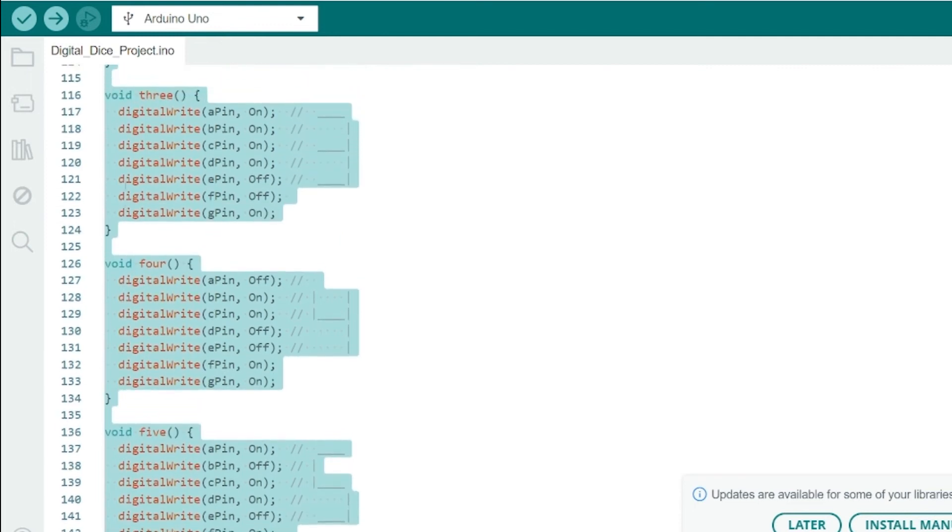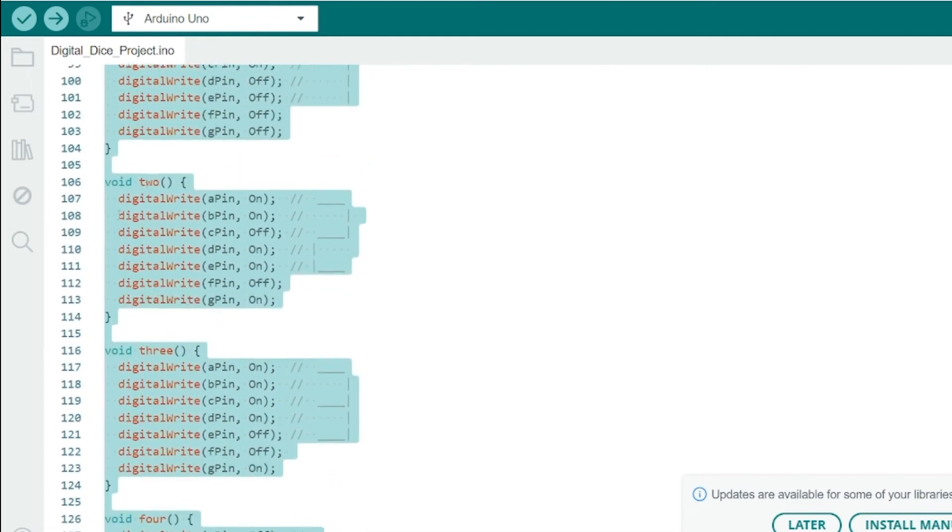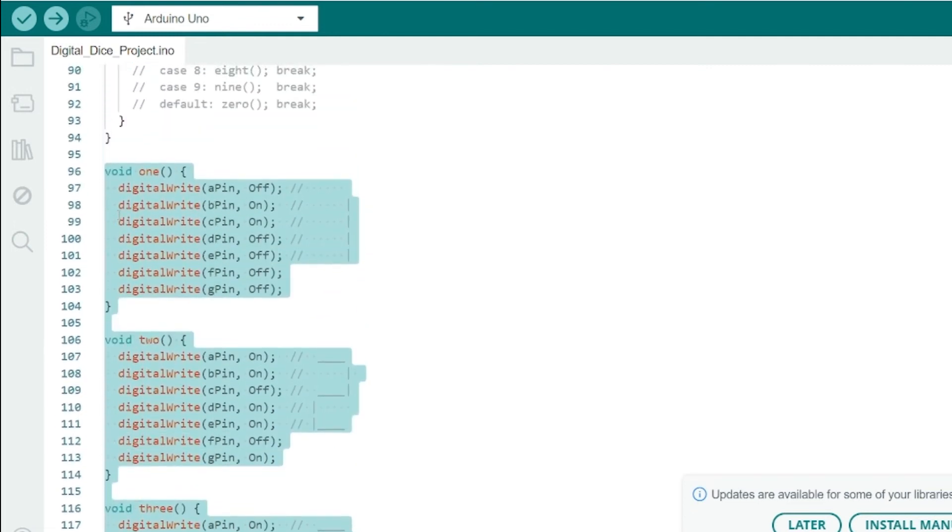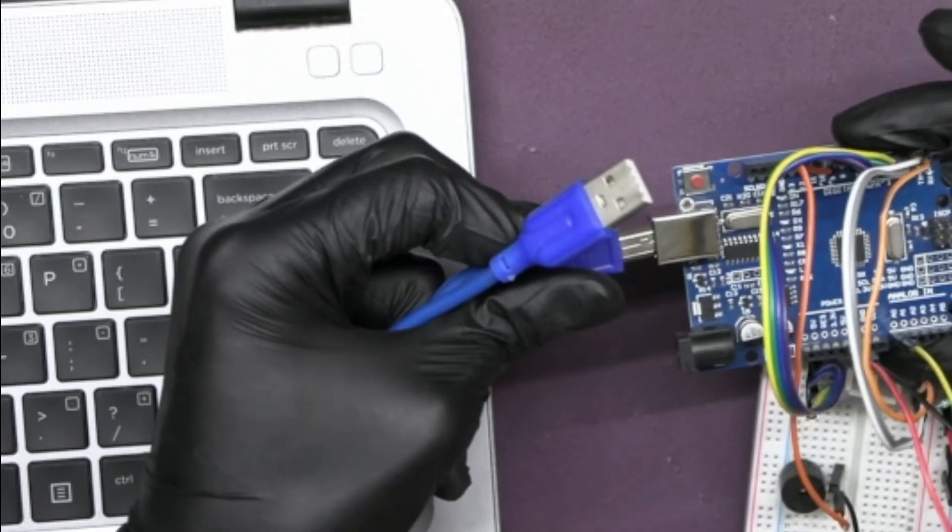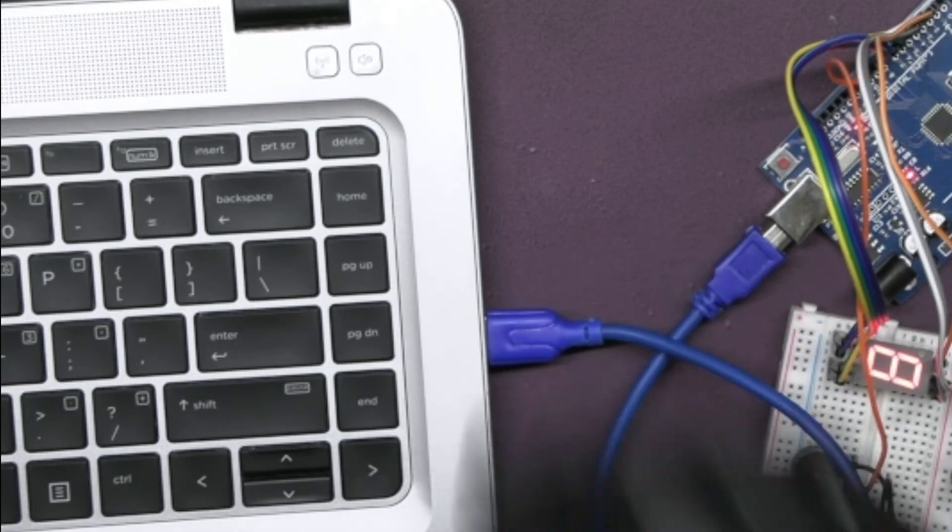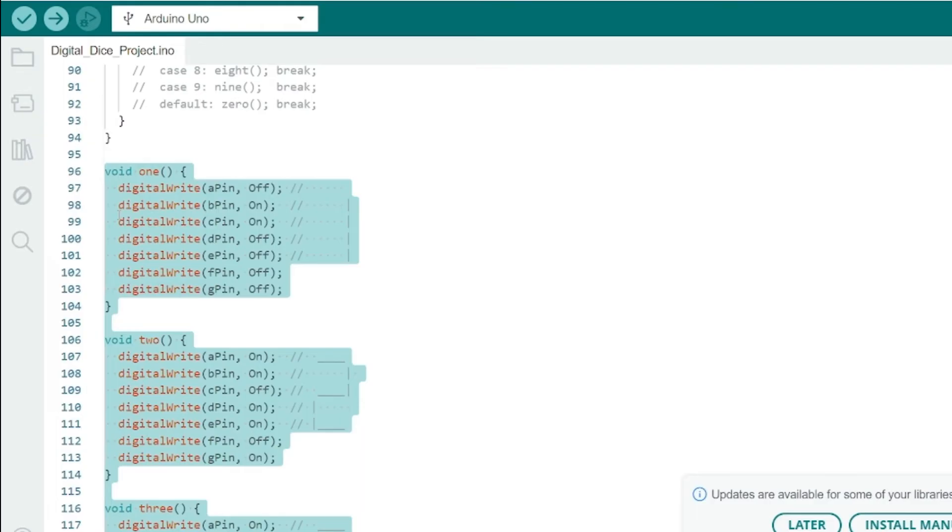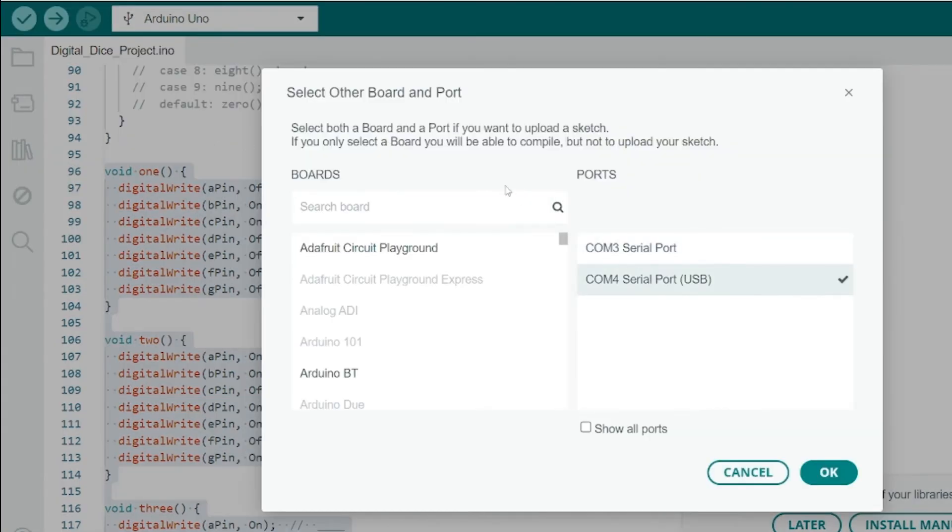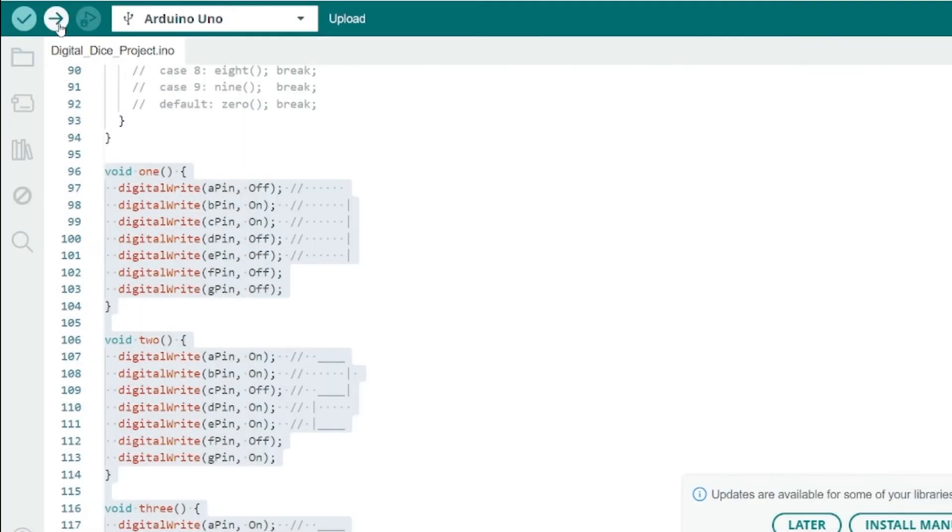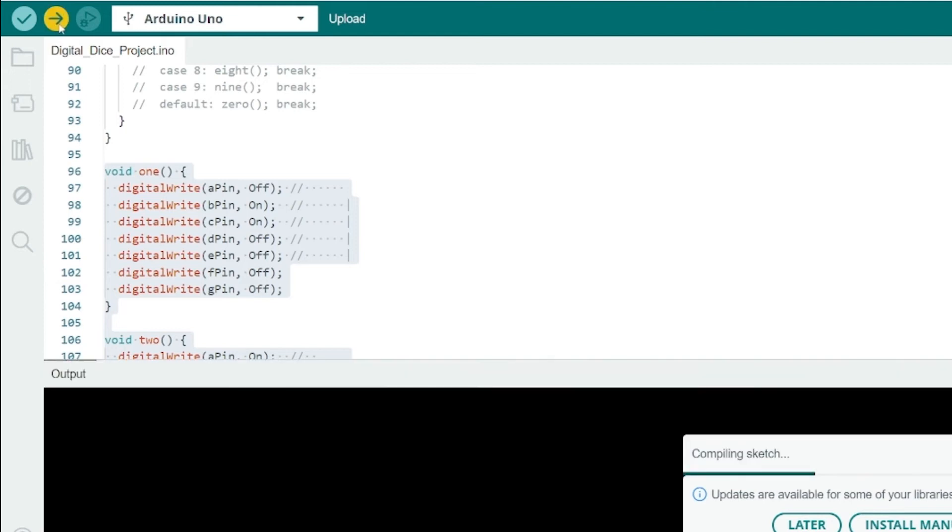And that's the code for our lucky roller digital dice. Now upload the code by following some instructions. Connect the Arduino Uno to your computer using a USB cable, then select port and board in the same menu and select Arduino Uno. Now upload the code by clicking the upload button. You can see the sketch is first verified by the compiler and then upload it to the Arduino.